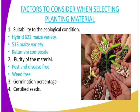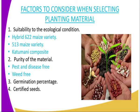Then the second factor to consider is purity of the material. Whenever you are selecting the planting material, you should select material which is free from pests and diseases, and also free from weeds. Then number three, we have germination percentage, or germination potential. Seeds meant for planting should have 100% germination potential, meaning that in every 10 seeds you plant, all of them should germinate. Then number four, we have certified seed. You should obtain the seed from the Kenya Seed Company, because they sell seeds which are certified and proven to have 100% germination potential, and are also free from pests and diseases.